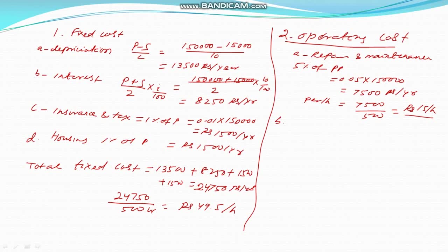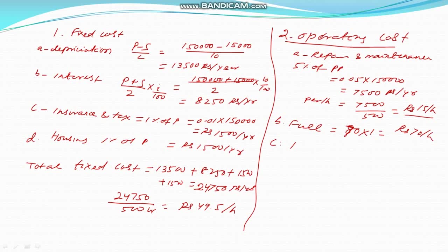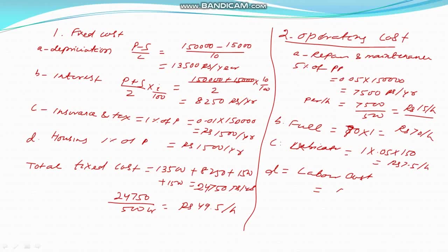Coming to fuel cost: fuel consumption is given as 1 litre per hour, and fuel cost is 70 rupees per litre, so fuel cost is 70 rupees per hour. Lubrication: oil cost is 150 rupees per litre, and lubrication consumption is 5% of fuel, that is 1 litre multiplied by 0.05 equals 0.05 litres per hour. So lubrication cost equals 0.05 multiplied by 150 equals 7.5 rupees per hour. Labor cost is 50 rupees per hour.